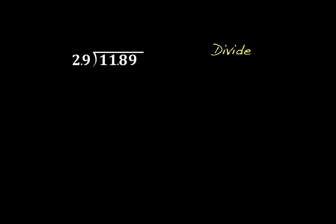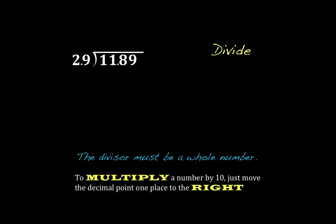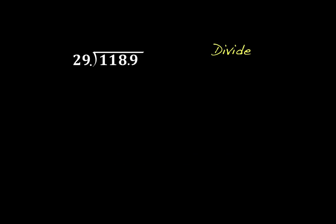Here's another example. We have 11 and 89 hundredths divided by 2 and 9 tenths. Once again, we have a decimal in the divisor, so we can't do that. We're going to go ahead and move that decimal point over. And we're going to move it over one place. And we'll do the same to our dividend, one place. Rewrite the problem here. Get rid of that decimal. Bring our other decimal up.